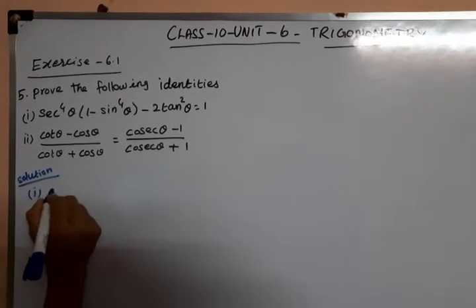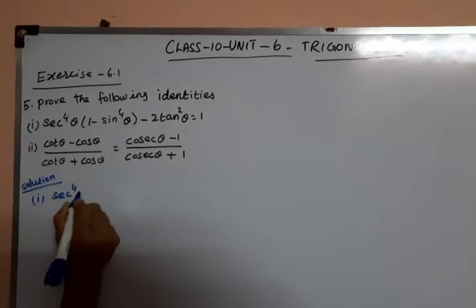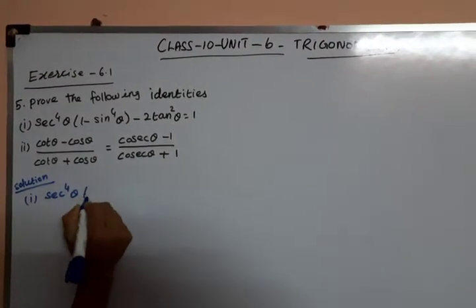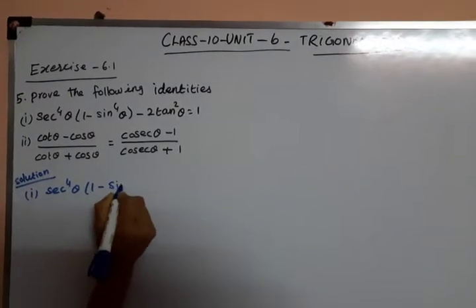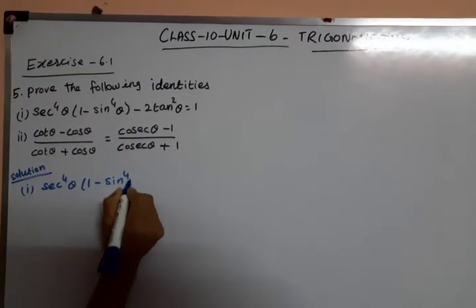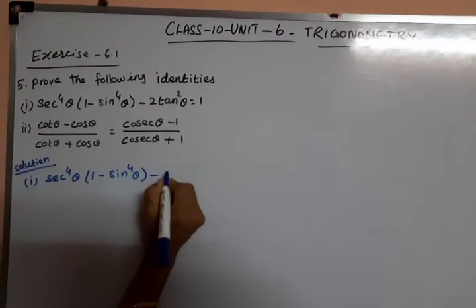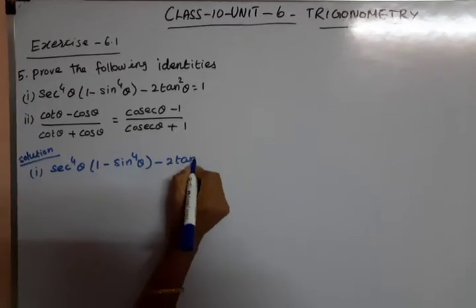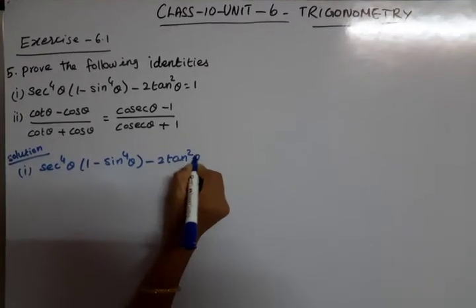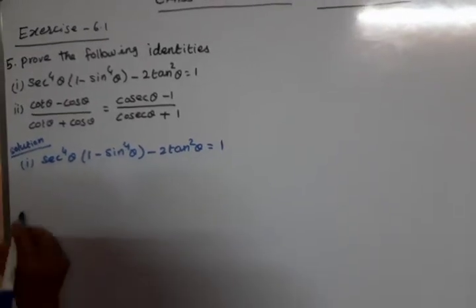First, we say: sec⁴θ into (1 minus sin⁴θ) minus 2tan²θ equals 1. That's what we need to prove.